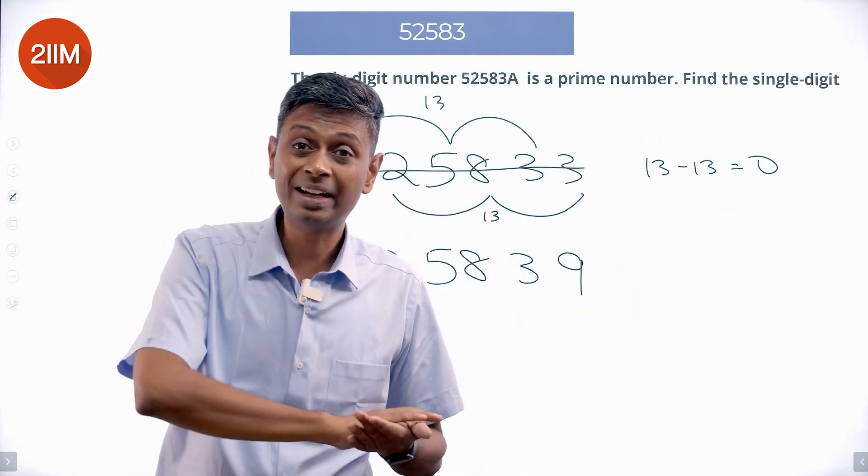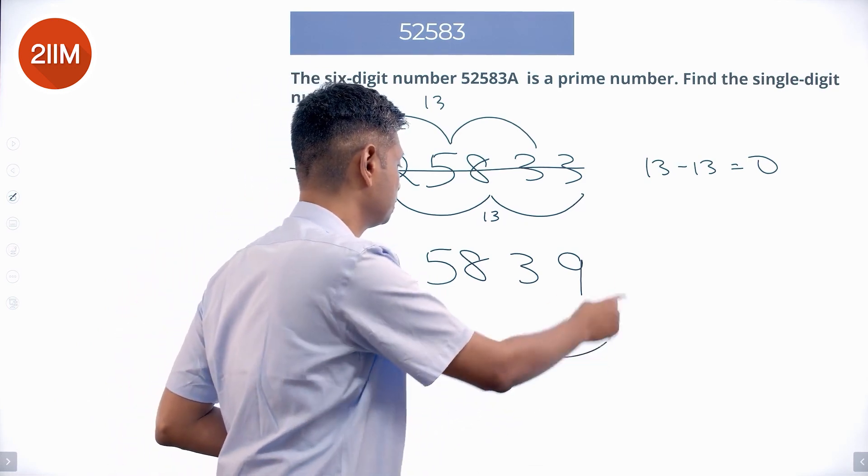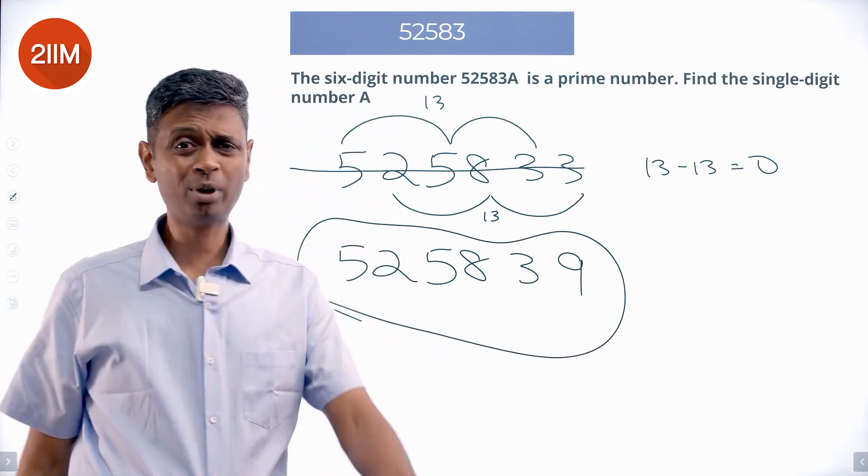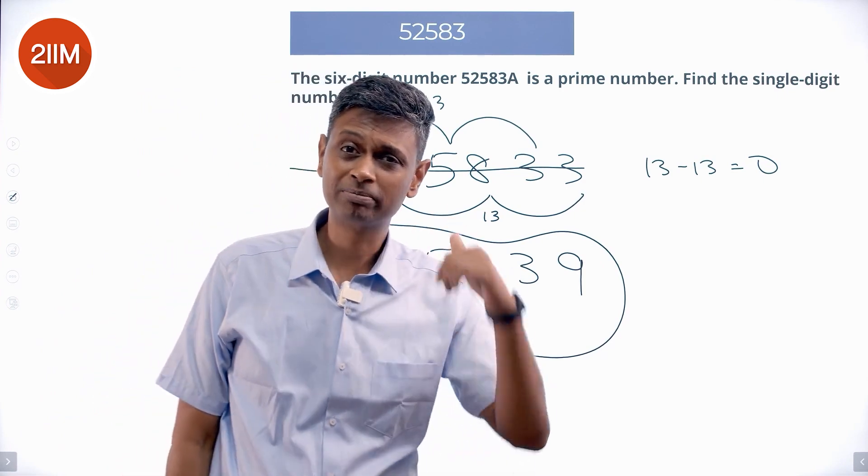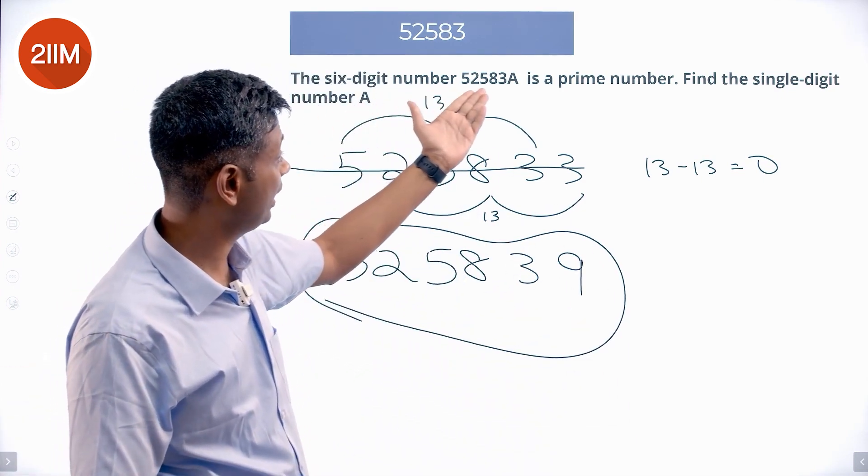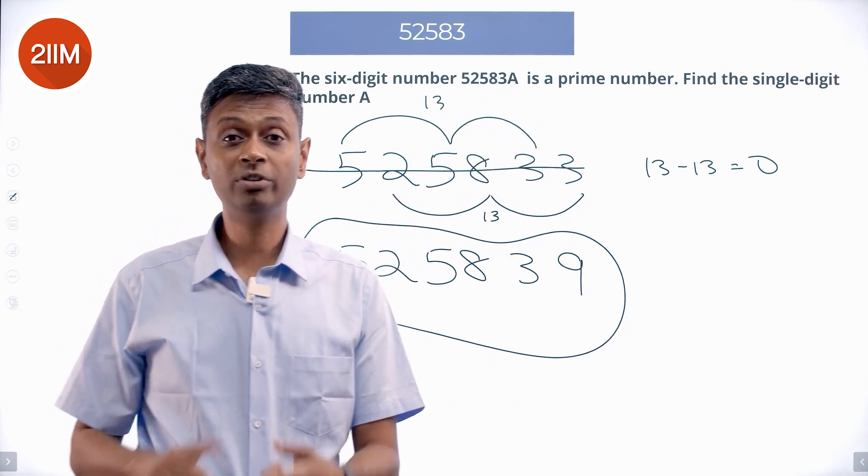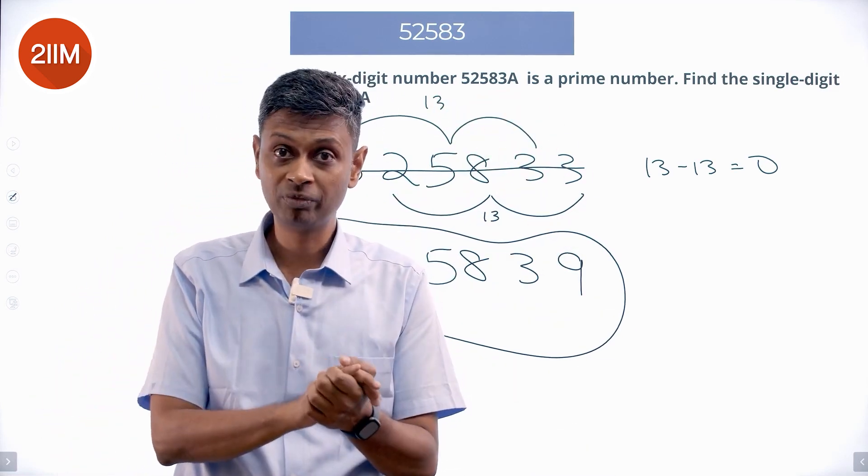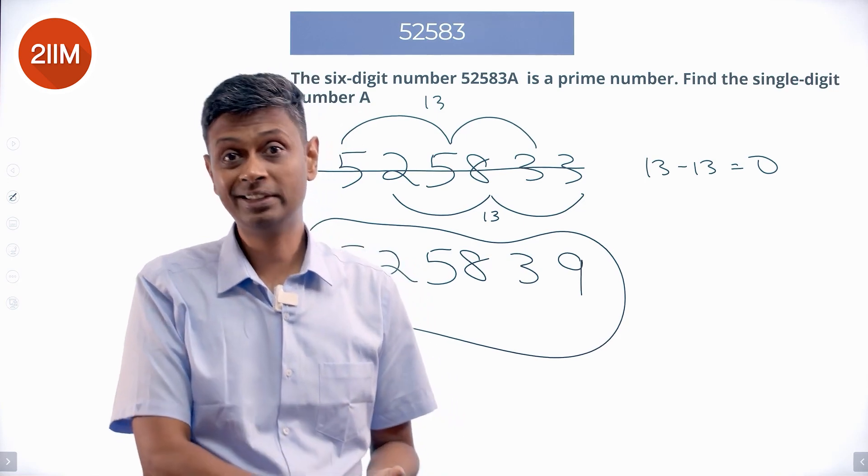That means I have eliminated everything except this. It is not my problem to worry whether this is prime—this will be prime because the question is saying so. The 6-digit number 52583A is a prime number. A cannot be 0, 2, 4, 6, 8. A cannot be 5. A cannot be 1, 3, or 7.